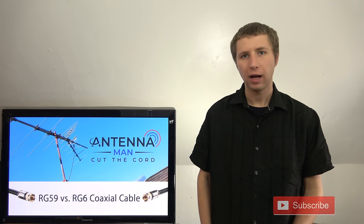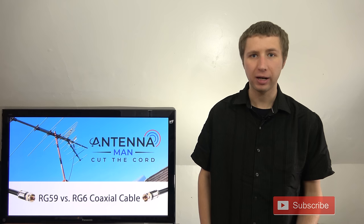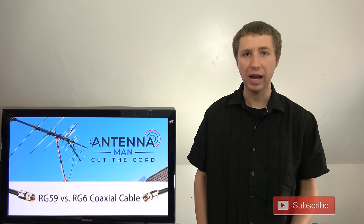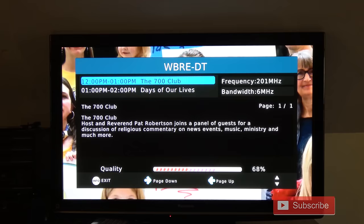I'm now going to demonstrate how well each of these coaxial cables work when connected from an antenna to a TV set. I'm using the same antenna in the same exact location for each of these cables, and each cable is cut to exactly 25 feet. So you're going to see how much of an impact the cable you use has on your TV reception.